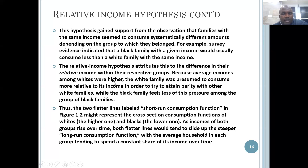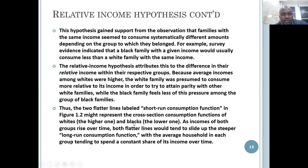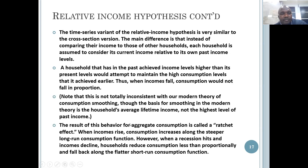The hypothesis gained support from the observation that families with the same income seem to consume systematically different amounts depending on the group to which they belong. For example, survey evidence indicated that a Black family with a given income would usually consume less than a white family with the same income. The relative income hypothesis attributes this to the difference in their relative income within their respective subgroups. Because average incomes among whites were higher, the white family was presumed to consume more relative to its income to attain parity with other white families, while the Black family felt less of this pressure. As incomes of both groups rise over time, both short-run consumption functions would slide upward along the steeper long-run consumption function.